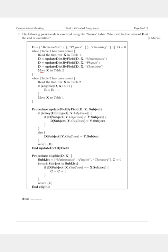And then we move x to table number 2. Now, before going forward with the next block of code, let us see what this helper function is doing for us. In the first line we see that if is key d of subject comma y dot city town, this means that if this city was already present within this empty dictionary,